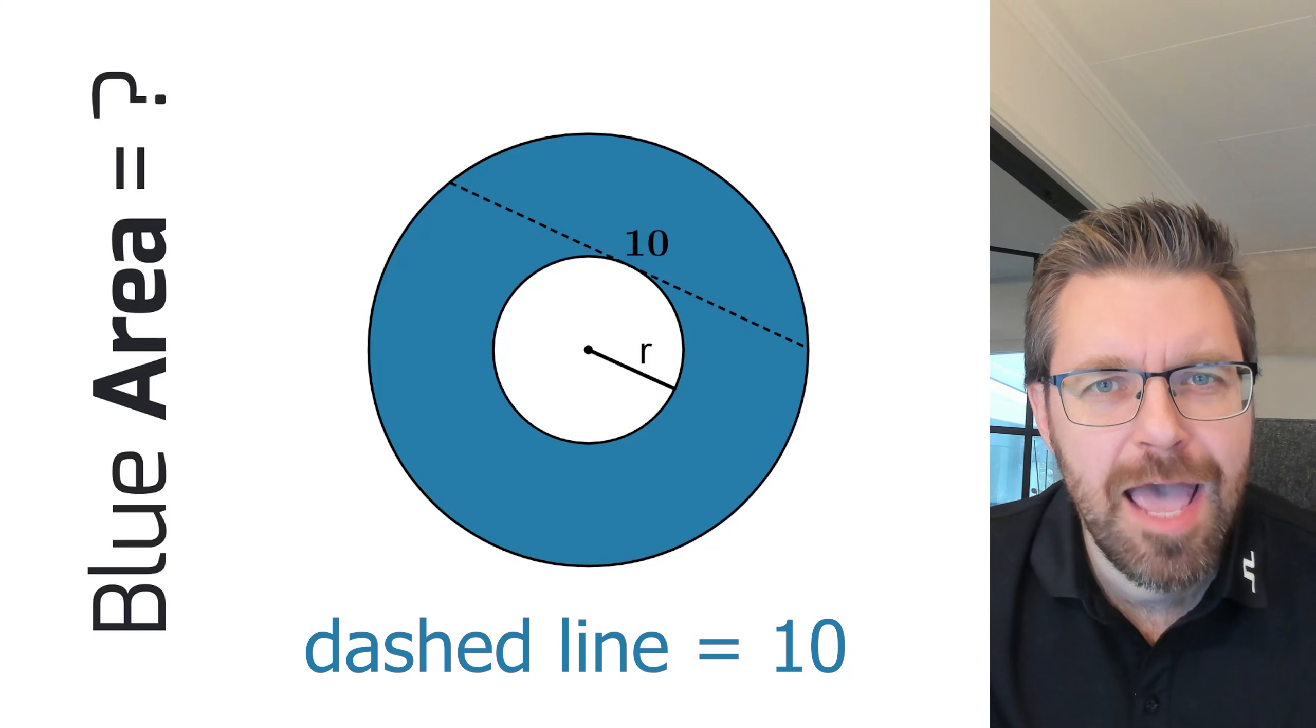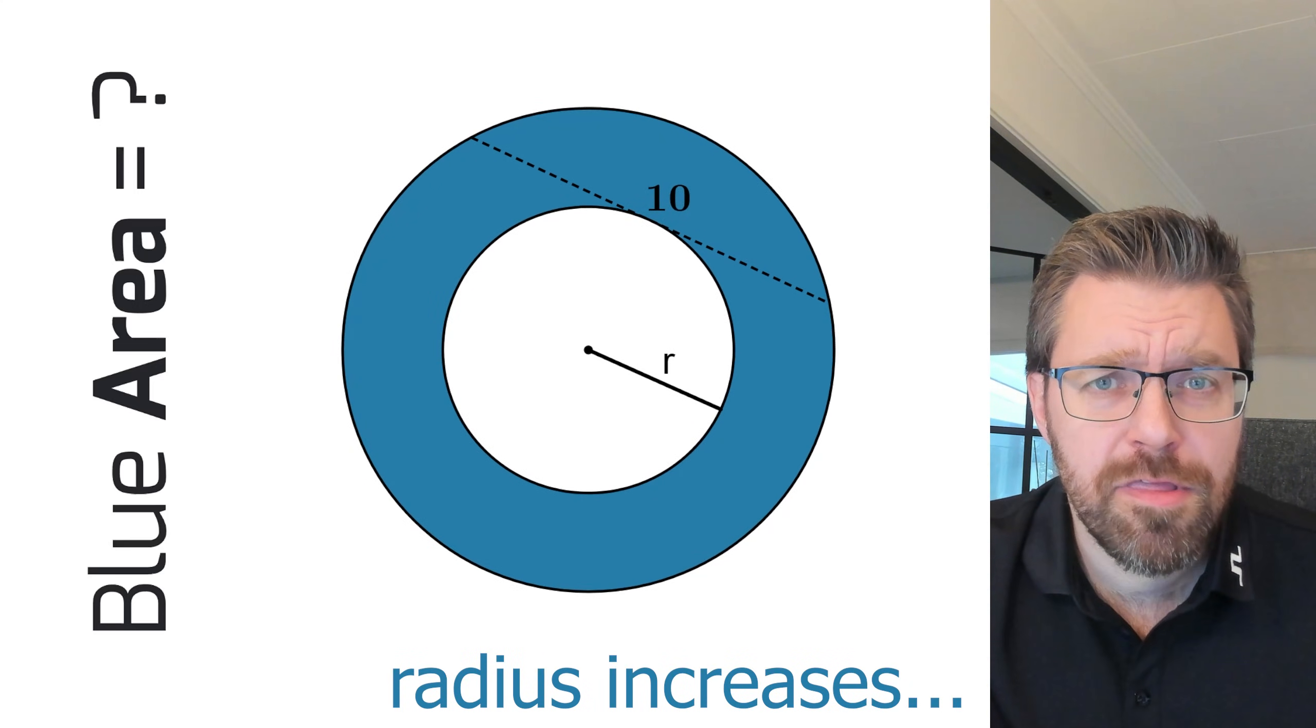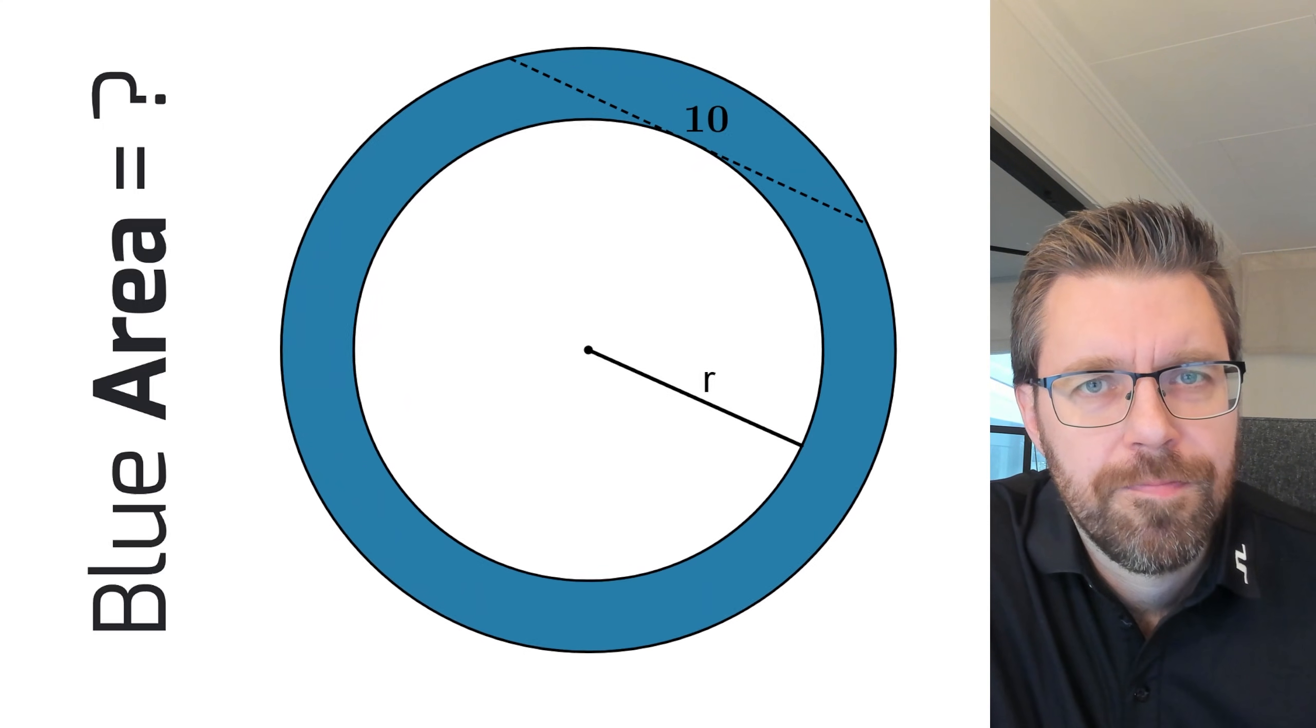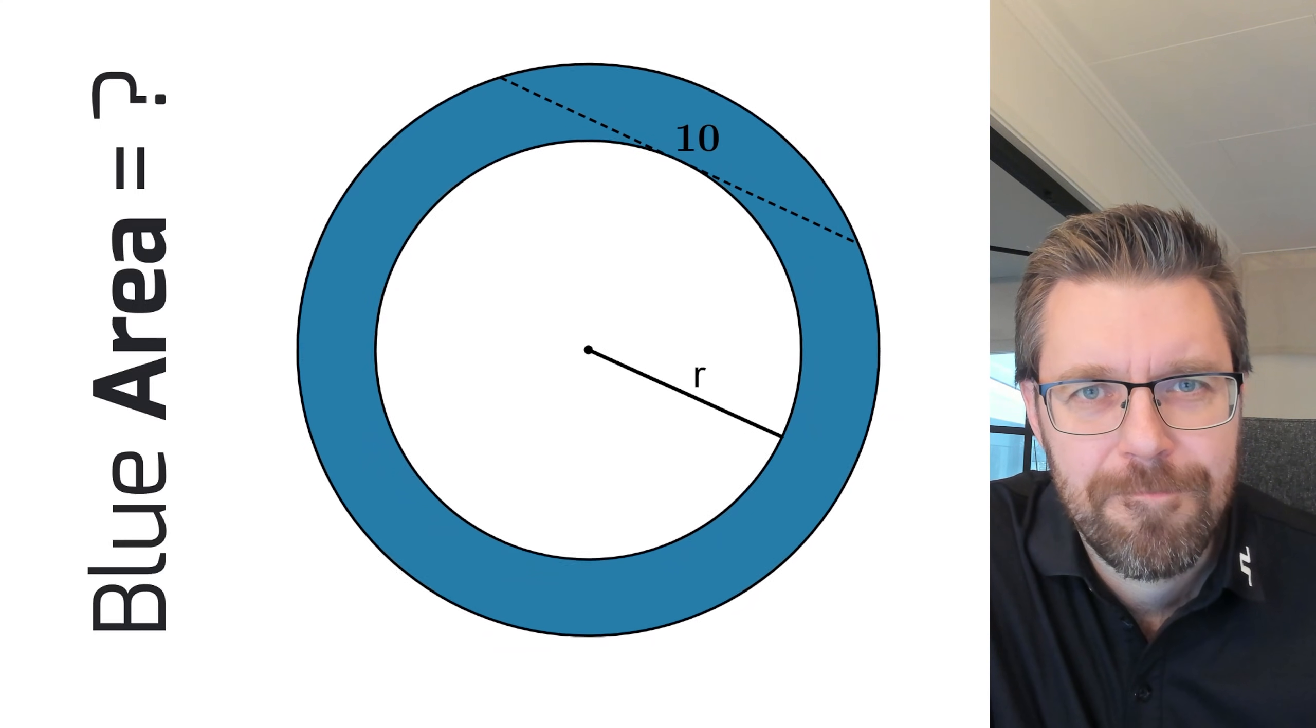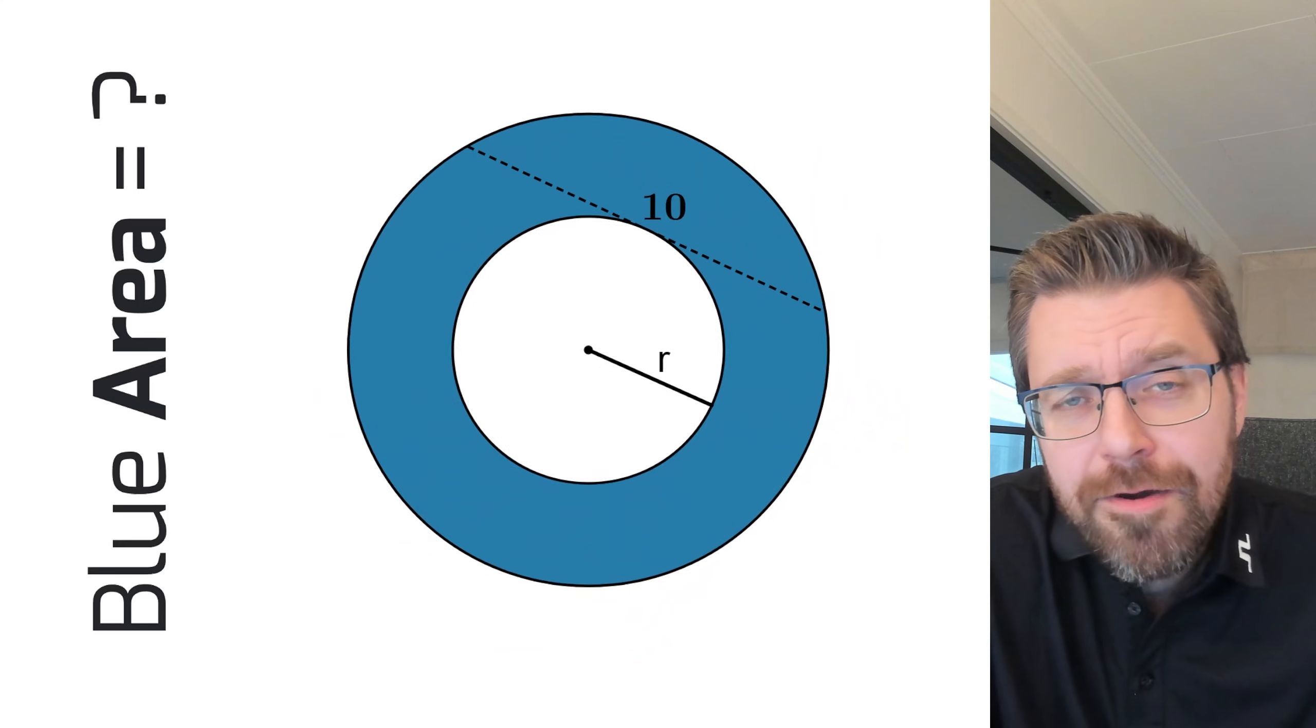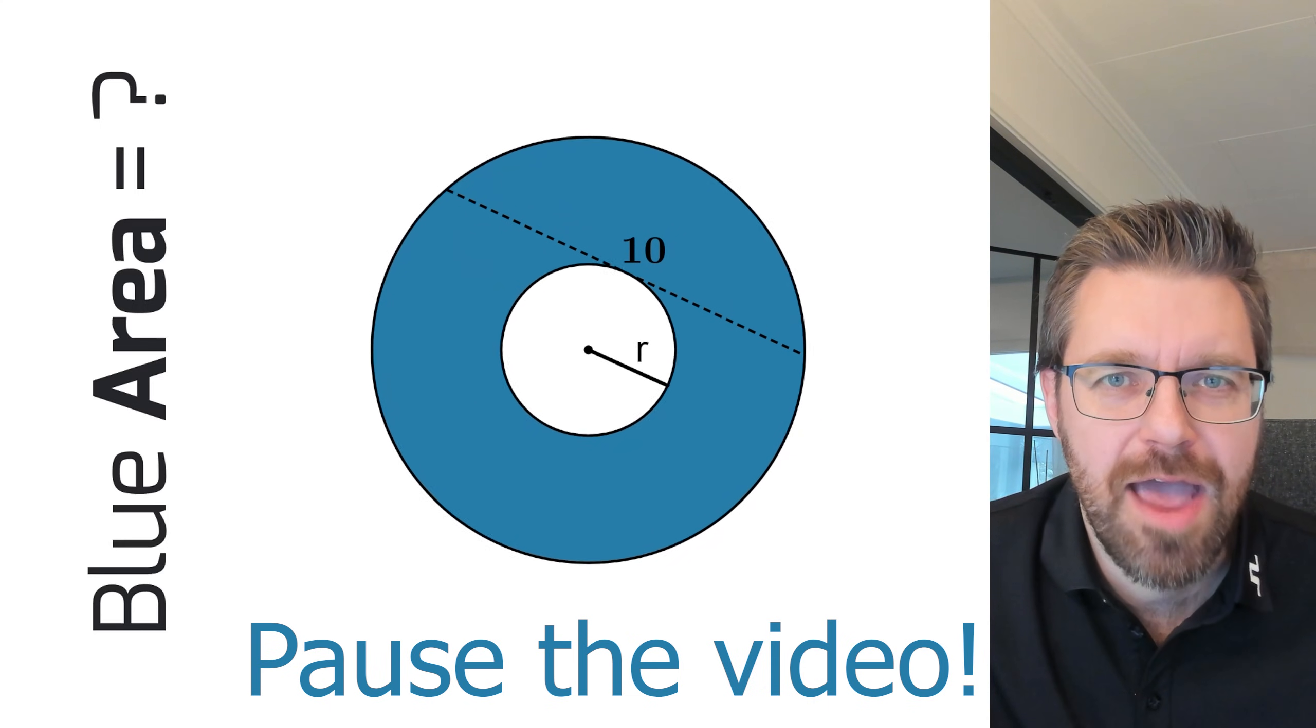But what will happen to the circles if the radius of the smaller circle is increasing? Look. When the radius increases, both circles need to be increased too, and the value of the area is still going to be the same number. When the radius decreases, the area is still going to be the same number. So please pause the video and try to calculate the blue area.